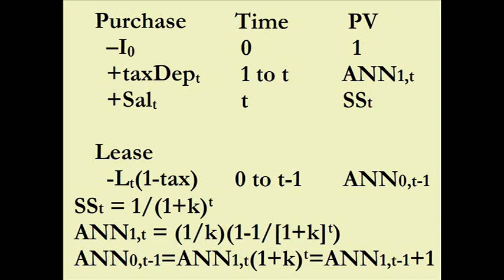For the annuity, we can use Excel, calculators, or tables. The mnemonic trick is to recognize that an annuity is a perpetuity minus a delayed present value of the perpetuity not received. You can see it in the formula: reciprocal of the discount rate for the perpetuity, minus the portion not received — the present value at time period T.